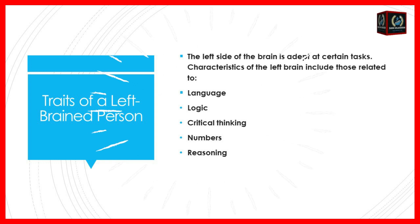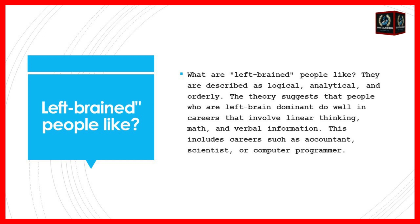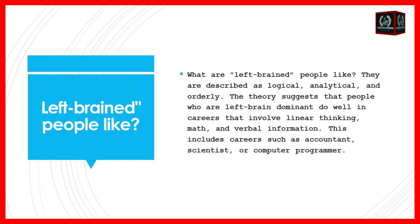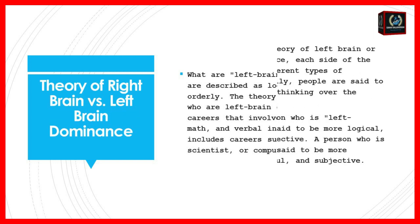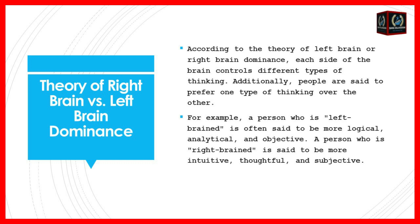Left-brain people are more described as logical, analytical, and orderly. This theory suggests that people who are left-brain dominant do well in careers involving linear thinking, math, and verbal information — such as accountants, scientists, or computer programmers. According to the theory, each side of the brain controls different types of thinking: a left-brain person tends to be more logical, analytical, and objective, while a right-brain person is more intuitive, thoughtful, and subjective.